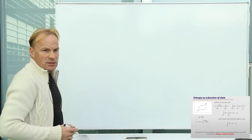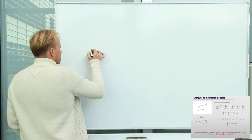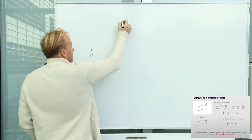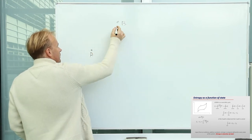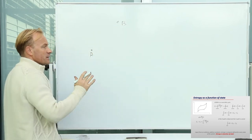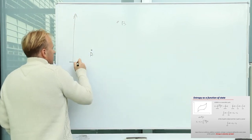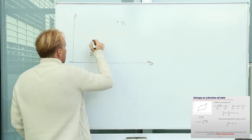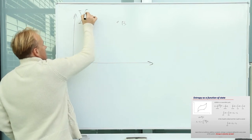Entropy, as I have emphasized several times, is the key quantity in thermodynamics. Entropy is a function of state and an additive quantity: if you have a body with entropy S₁ and a body with entropy S₂, the total entropy is S₁ plus S₂. Entropy is a function of state, meaning if I have point A and point B, it doesn't matter how I come from A to B — the entropy change will be the same.